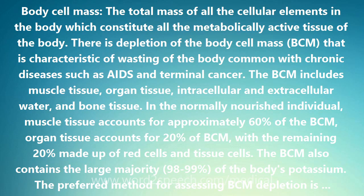The BCM includes muscle tissue, organ tissue, intracellular and extracellular water, and bone tissue. In the normally nourished individual, muscle tissue accounts for approximately 60% of the BCM, organ tissue accounts for 20% of BCM, with the remaining 20% made up of red cells and tissue cells. The BCM also contains the large majority — 98-99% — of the body's potassium.